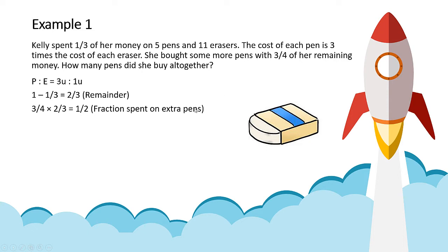Remember, she bought some pens using this fraction of money. And now we find the total cost of 5 pens and 11 erasers. You take 5 times 3 units because 1 pen is 3 units, plus 11 times 1 unit.